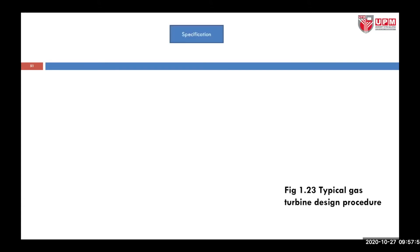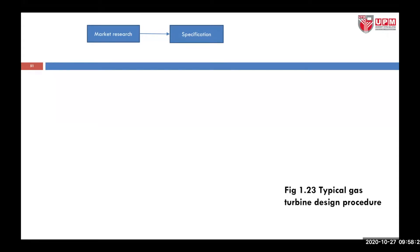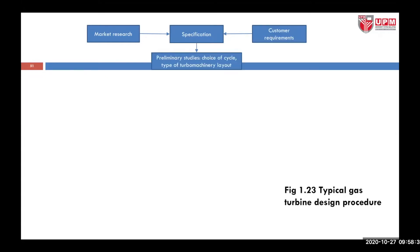A typical gas turbine design procedure starts with a specification. You want to define how much power or thrust the engine must produce and where it is going to be operated. To set the specification, you have to conduct market research — looking at competitors in terms of your engine application — and identify customer requirements: who is going to use or buy your engine.